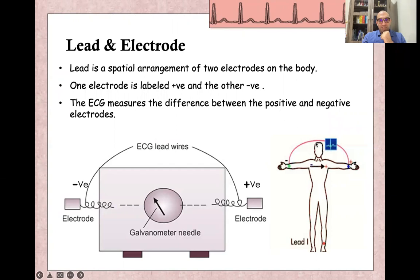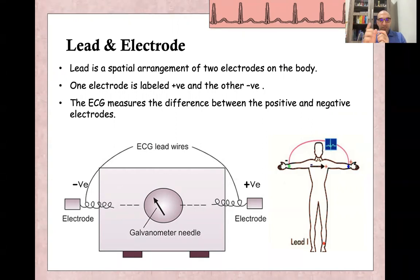A lead is a special arrangement of two electrodes. One electrode is labeled negative, and the other is labeled positive. The ECG machine works like a galvanometer — it measures the difference between the positive and negative electrodes. One galvanometer equals one lead, so a 12-lead ECG requires 12 galvanometers.